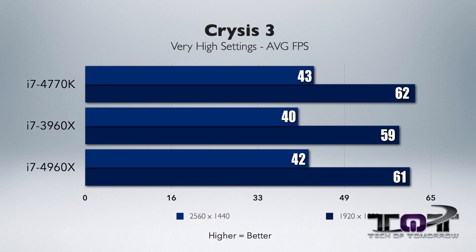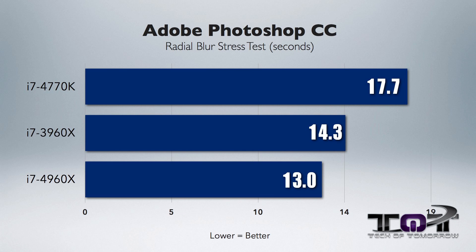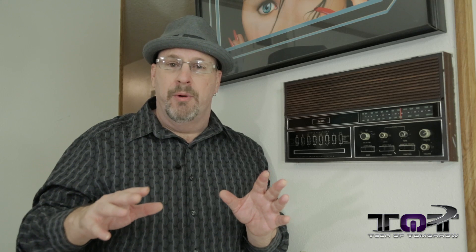For gaming, there's no reason at all, unless you're wanting a quad SLI or quad crossfire system, why you would want to jump into Ivy Bridge E. If you're going out and looking for a new system, and gaming is your primary use with one or two video cards and a 1080p monitor, don't waste your money. Jump onto the Haswell platform — you'll be doing just great and you'll be happy that you saved your money.